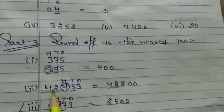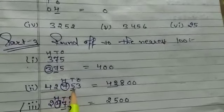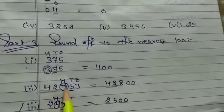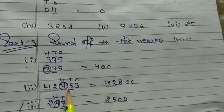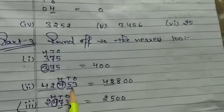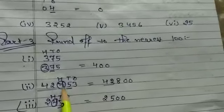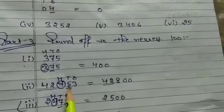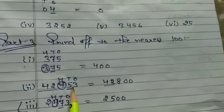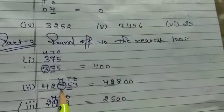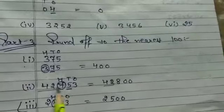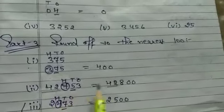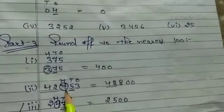Next question is 42753. Similarly, you have to circle the hundreds place. 5 equals 5, then you have to add one. When it's 5 or greater than 5, you have to add one. So it's 42800.